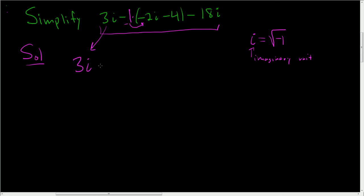And then negative and negative is positive, so positive 2i. And then negative 1 times negative 4 is positive 4. And this is still here, so this is minus 18i.